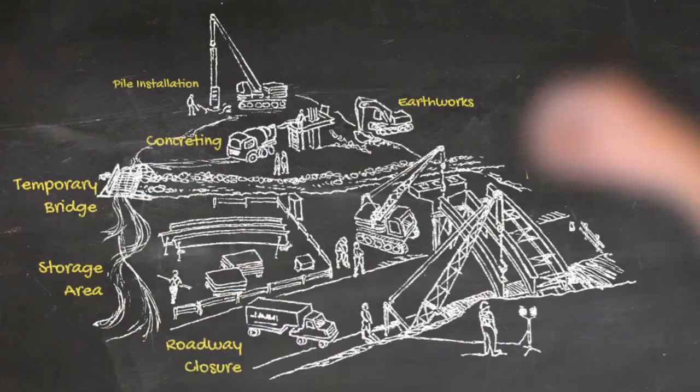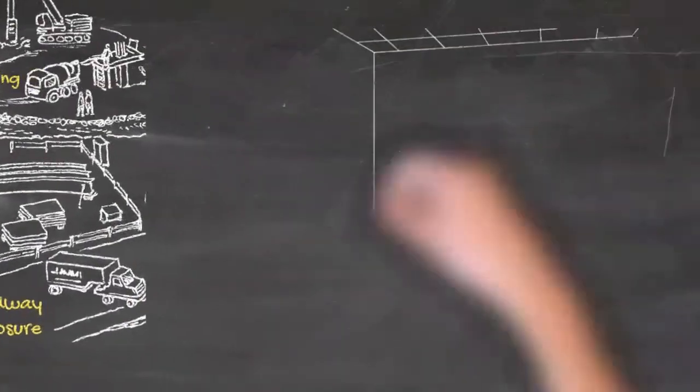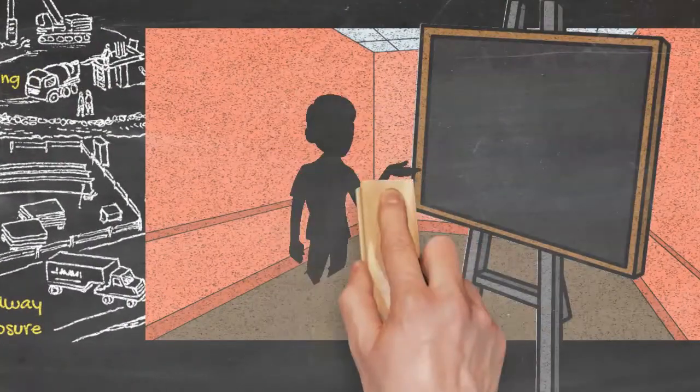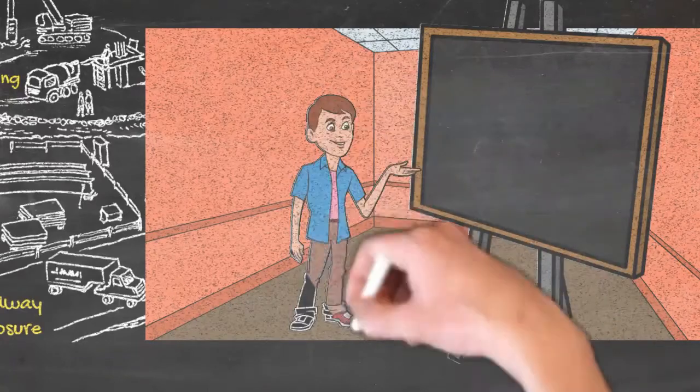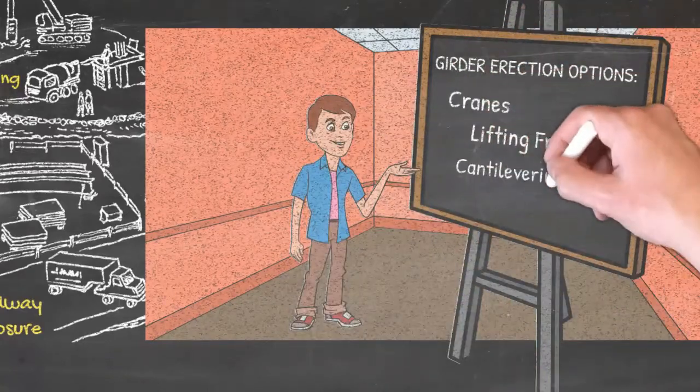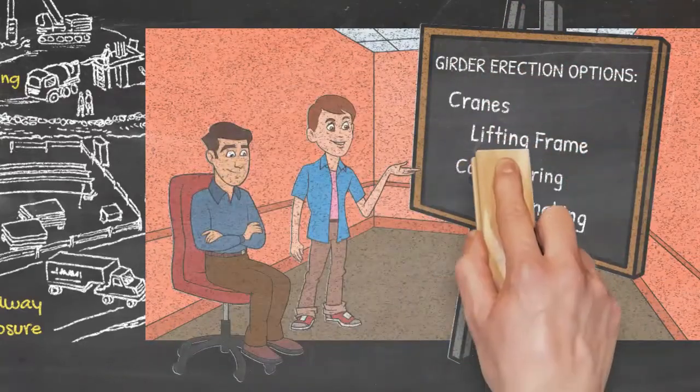On the project that you're working on, think of the various ways your superstructure can be erected. Conventional crane stick build, cantilevering, incremental launching, etc. With the help of your supervisor, select the best suited methodology.